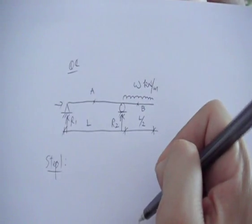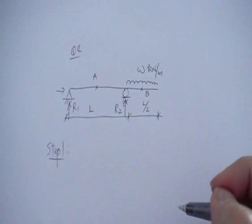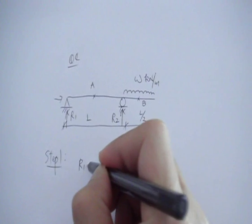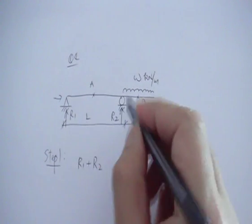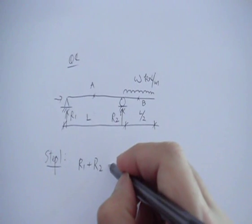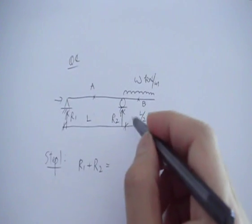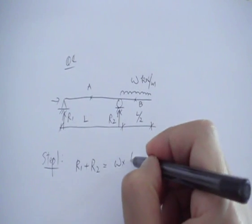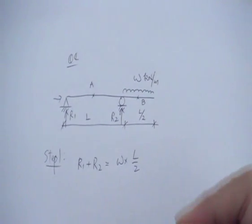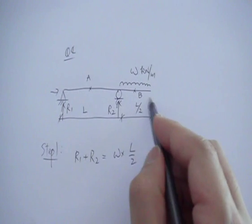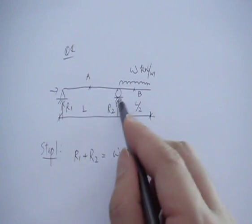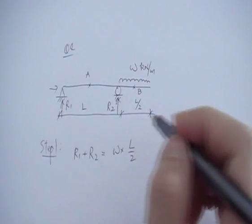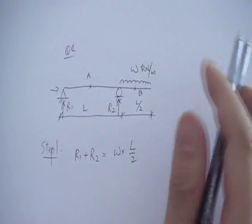R1 and R2, and then R1 plus R2 — those are two upward forces balanced by the downward load times L over 2. Then you consider rotational equilibrium about any one point.